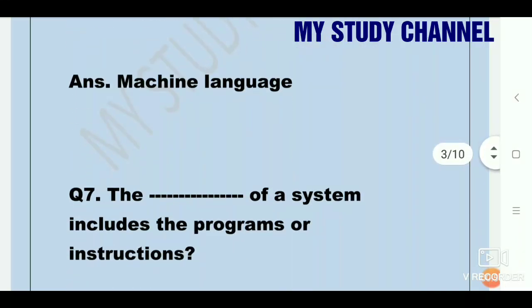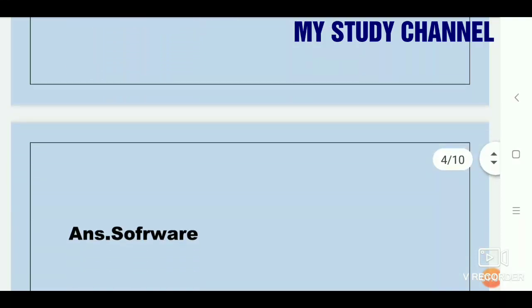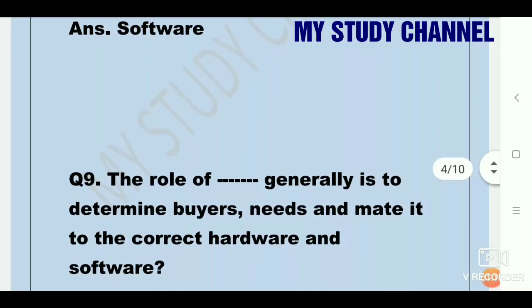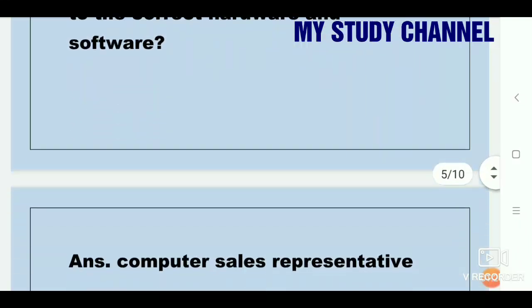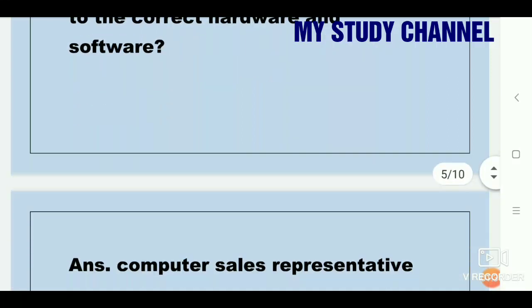The dash of a system includes the programs and instructions — answer: software. Another word for program is software. The role of a computer sales representative generally is to determine buyers' needs and match them to the correct hardware and software.